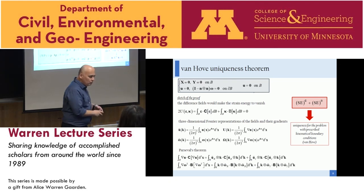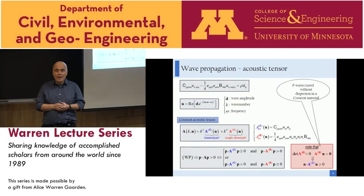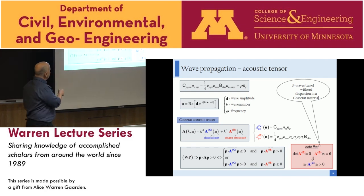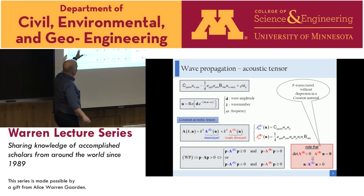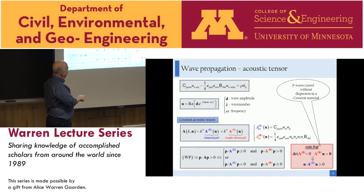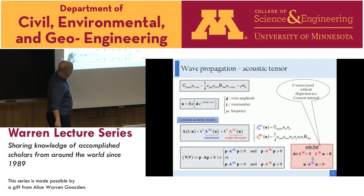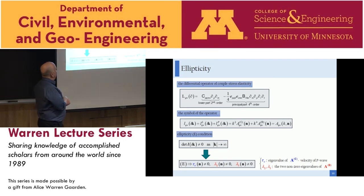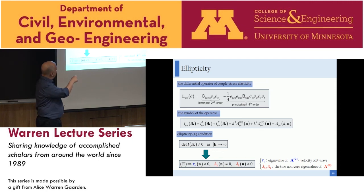Moving to wave propagation: we write the equation of dynamics and introduce the acoustic tensor, which is the sum of a classical part and a couple stress part. Based on positive definiteness of the acoustic tensor we have wave propagation. P waves always travel without dispersion, but S waves are always dispersive. The ellipticity condition involves a singular differential operator with a classical second-order part and a fourth-order principal part.